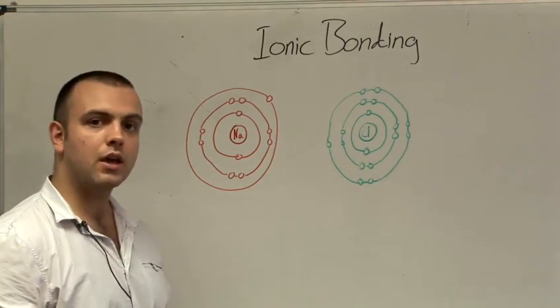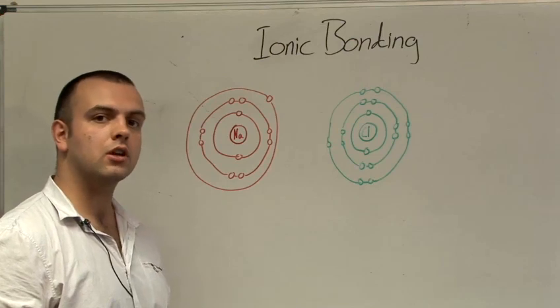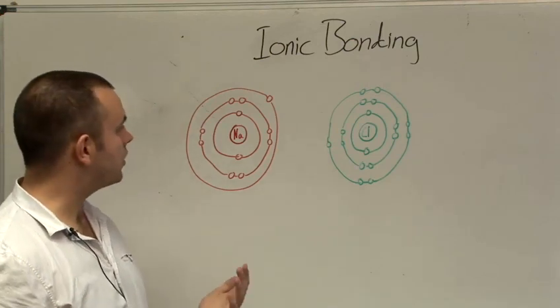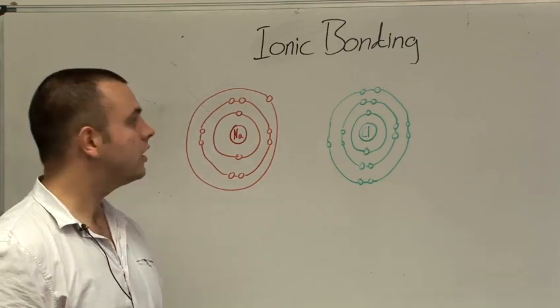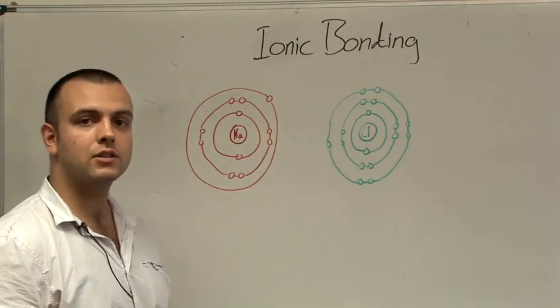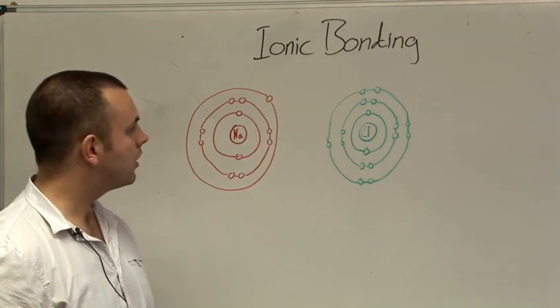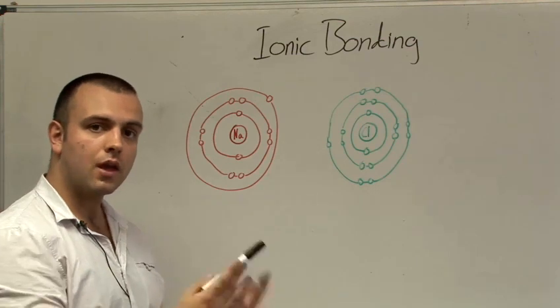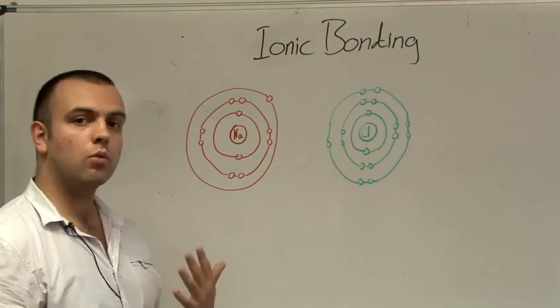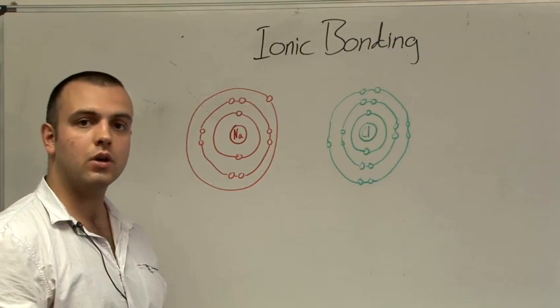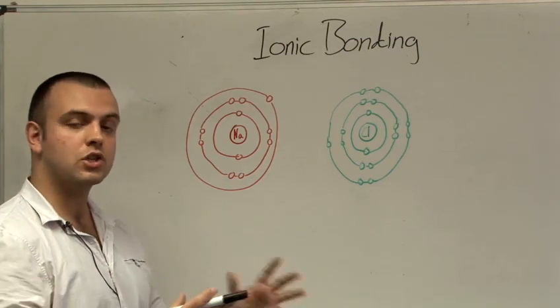Now atoms are generally more stable when they have a full outer electron shell. The easiest way for sodium to gain a full outer electron shell is to lose the one electron it has in its outer layer. This is because it's a metal. It's found on the left of the periodic table, which means metals generally have one, two or three electrons in their outer shell.